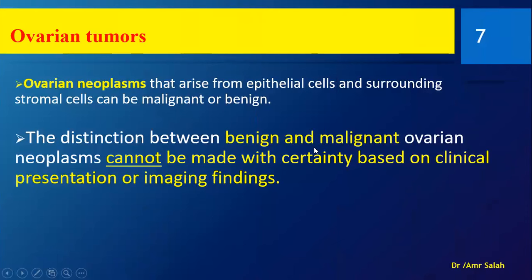The distinction between benign and malignant ovarian neoplasms cannot be made with certainty based on clinical presentation or imaging findings alone. Ultrasound cannot definitively say whether a tumor is benign or malignant. Our job is just to say this is a tumor and recommend further investigation — either by excision and pathology or by MRI.